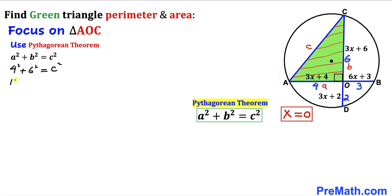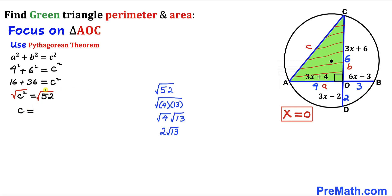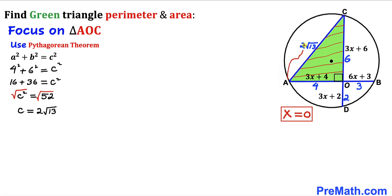This gives us 16 + 36 = c², so c² = 52. Taking the square root of both sides, c = √52. Simplifying √52 gives us 2√13. So our hypotenuse AC turns out to be 2√13.